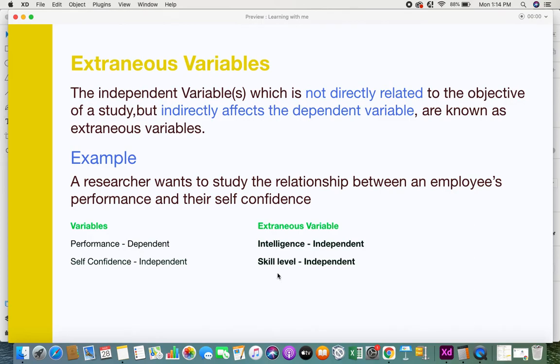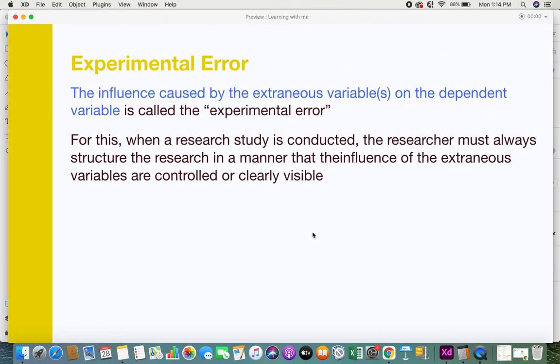There's something called experimental error. The influence caused by the extraneous variables on the dependent variable is called the experimental error. You would come across this term, and this is what it means.